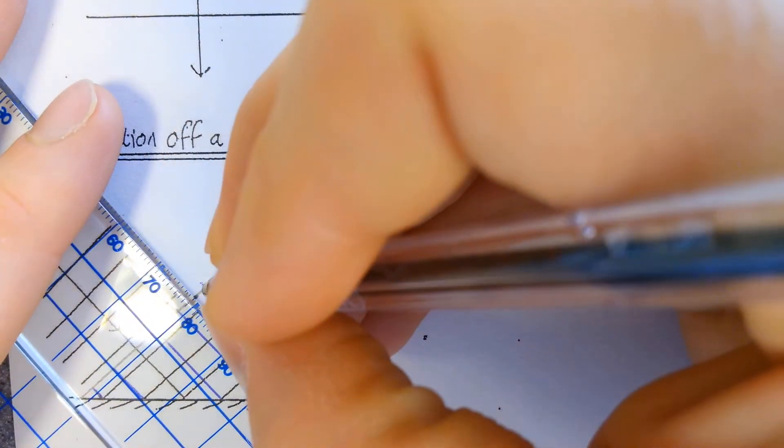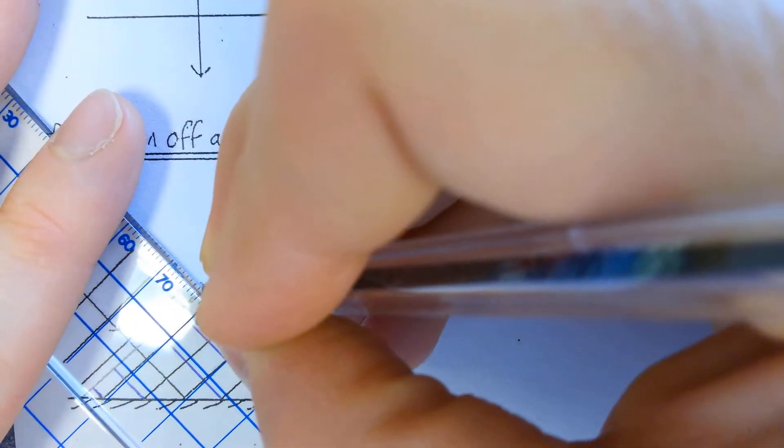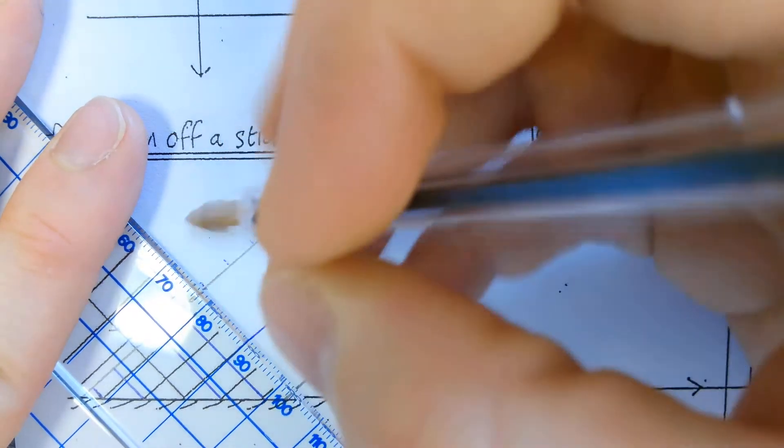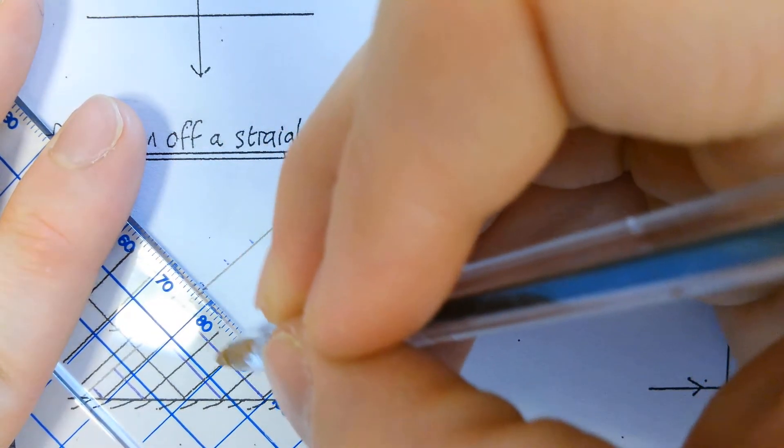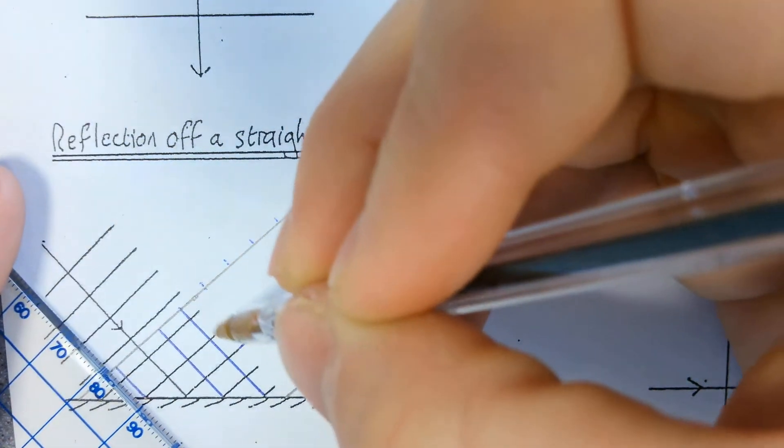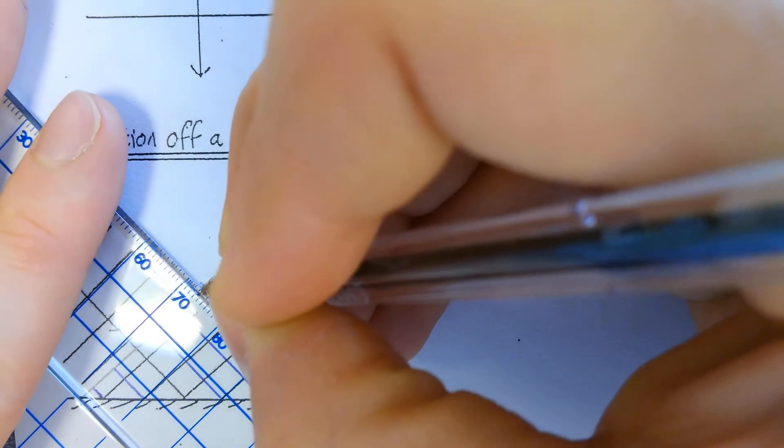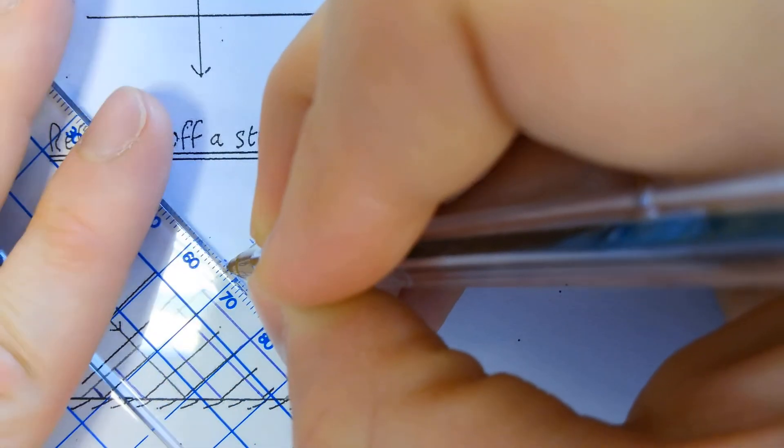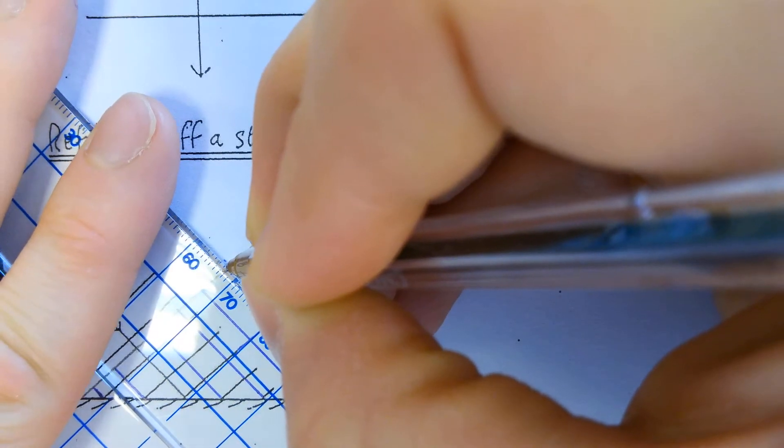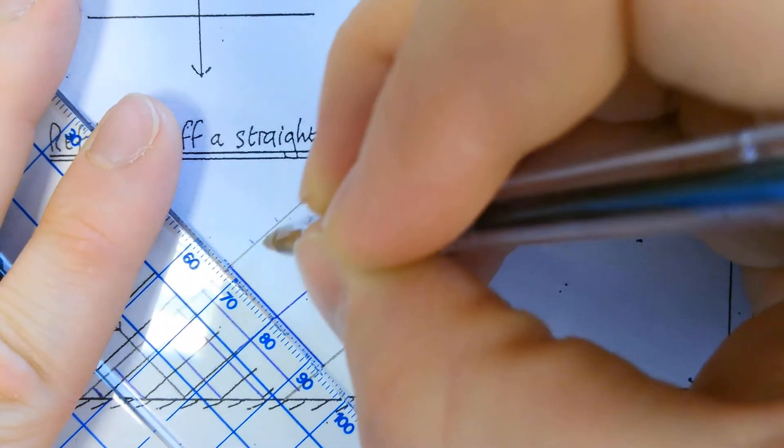Now I'm just going to trace these on, making sure that this line is parallel to this line. So these lines here, the ones I'm going to draw, need to be parallel to this. Just being careful, everything nice and parallel.